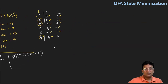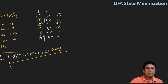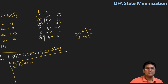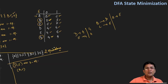Now we will check for three equivalence. For D and E: D on zero goes to G and E on zero also goes to G; D on one goes to G and E on one also goes to G — so they are three equivalent. For B and C: B on zero goes to D, C on zero goes to E, D and E are in the same set; B on one goes to E and C on one goes to D, so E and D are in the same set — hence B and C are three equivalent. There is no change between two equivalence and three equivalence.